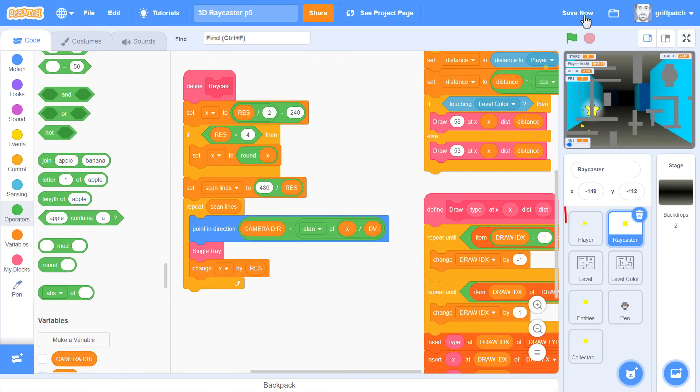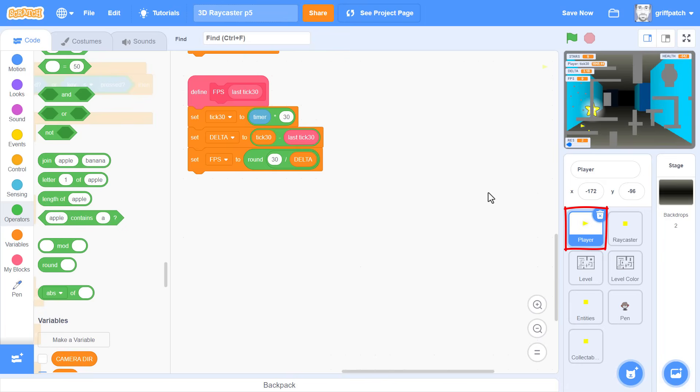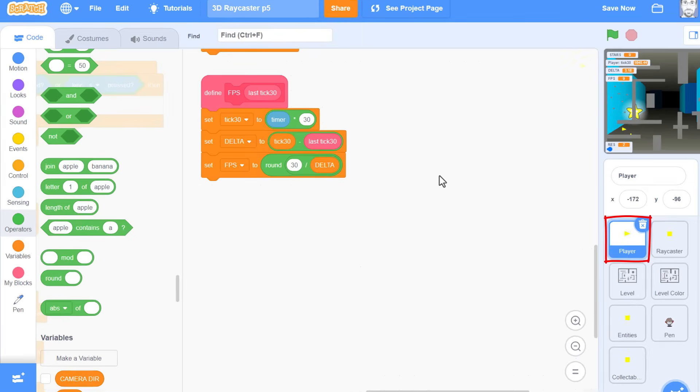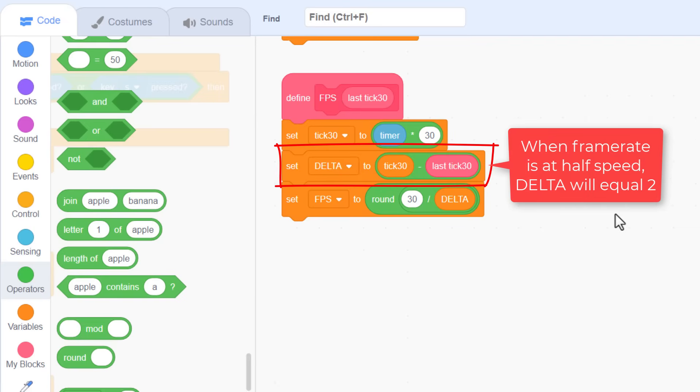In any decent first person game, the player's movements have to be completely independent of the frame rate. When my game is running half speed, this delta value rises to 2. This tells us that we should be moving twice as fast to compensate for the slow frame rate. Useful.